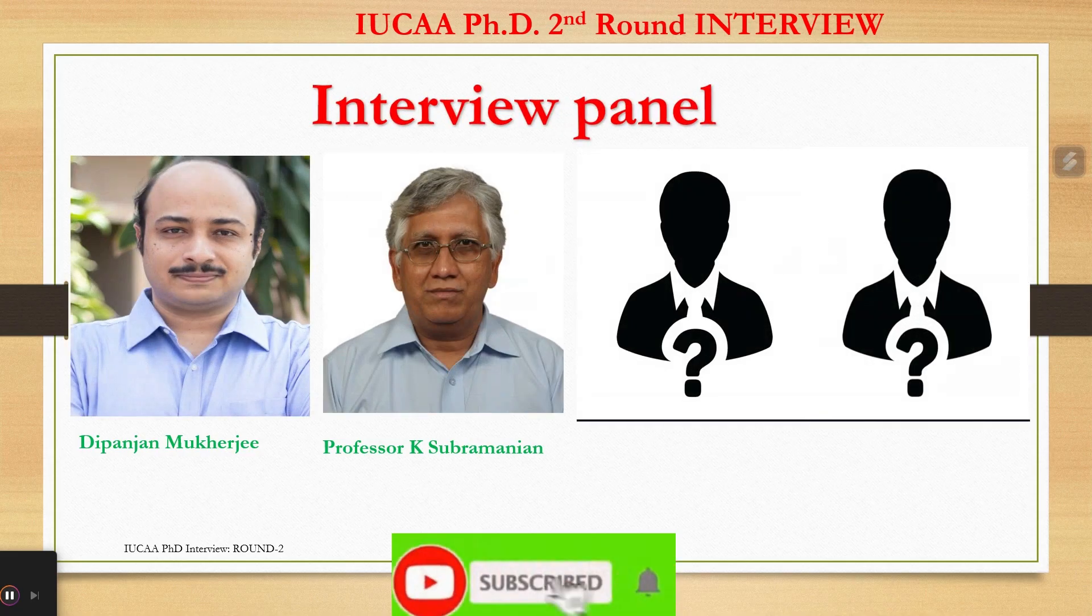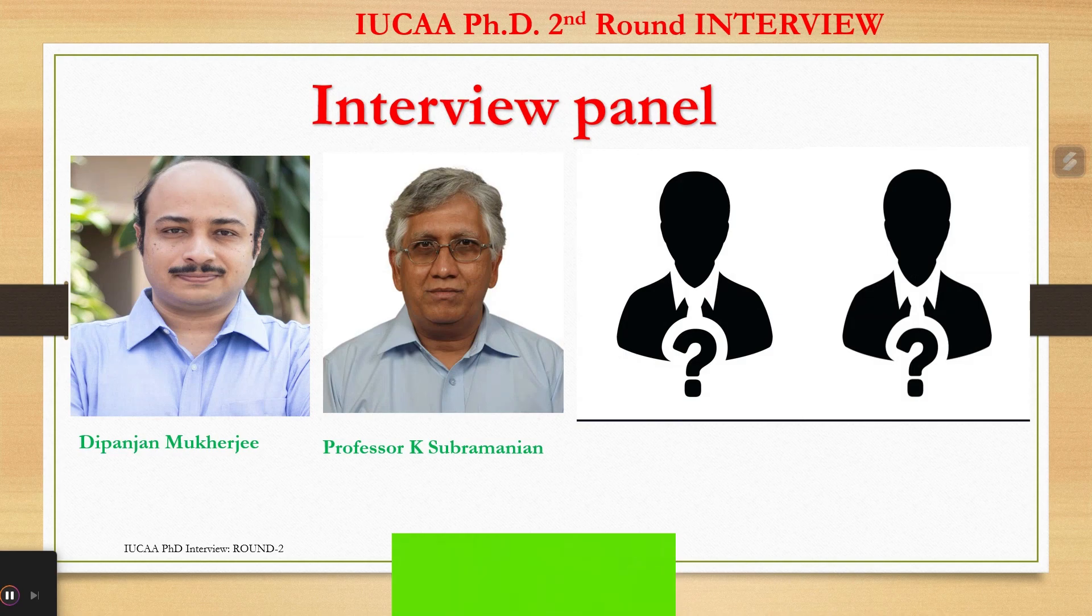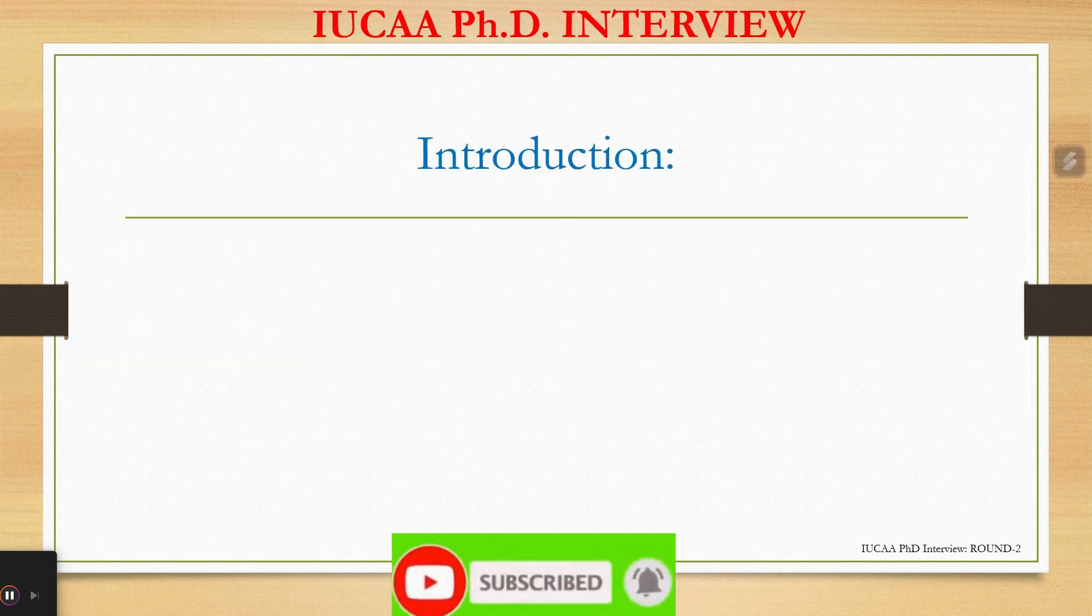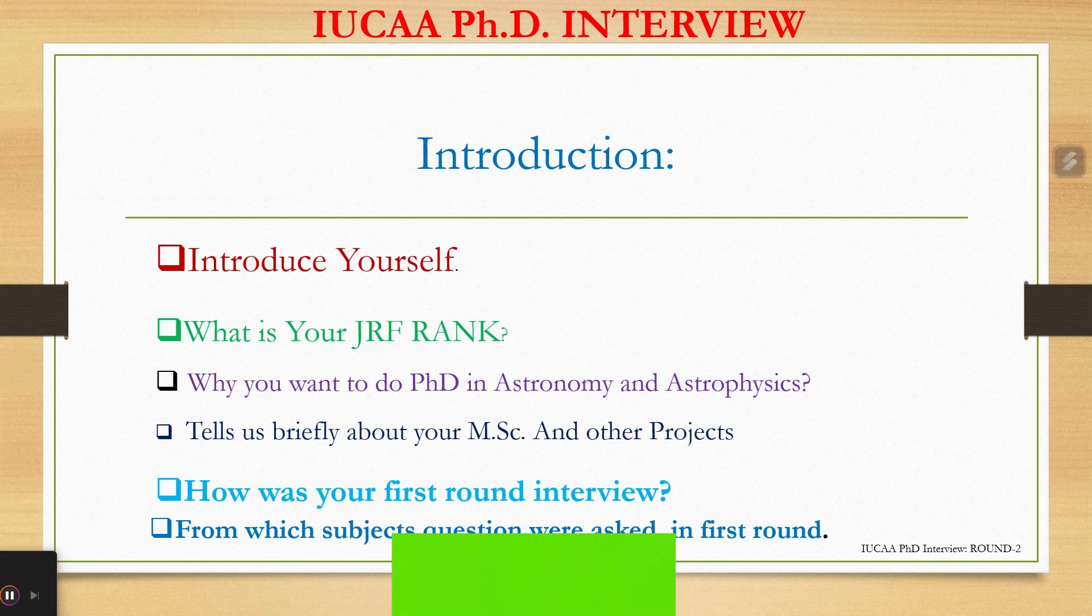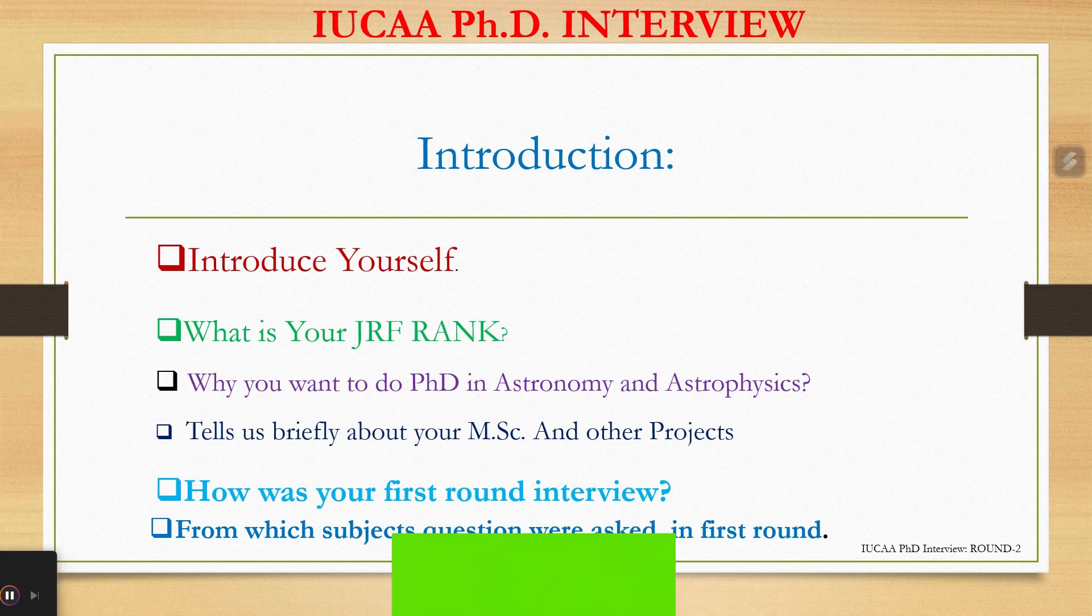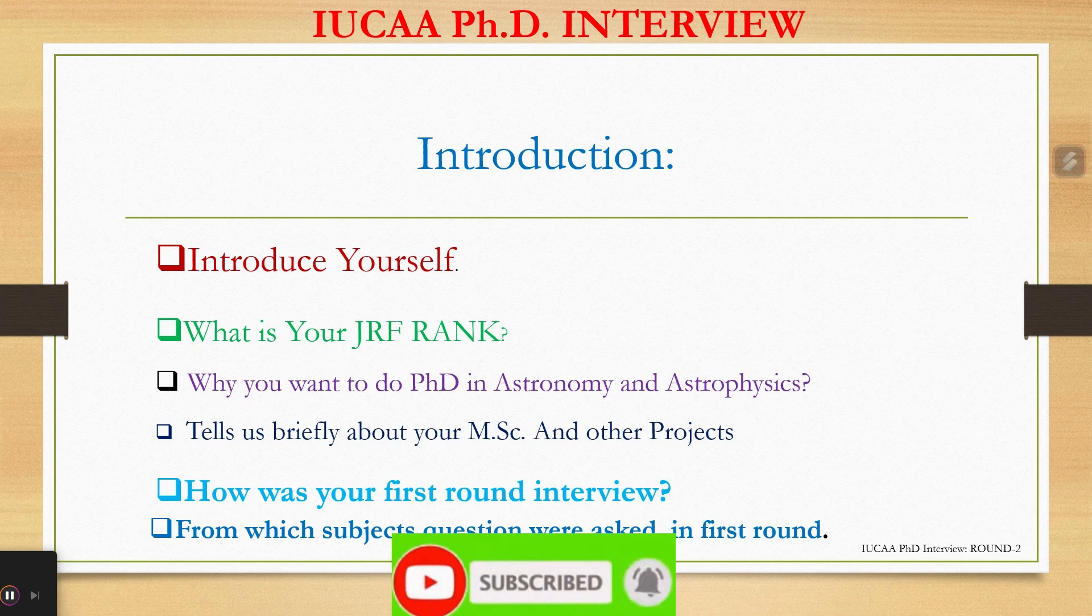When I joined my interview panel they asked me to introduce myself. Then inquired about JRF rank. Some queries like why you want to do PhD in Astronomy and Astrophysics. Tell us briefly about your MSc and other projects if you have done. What kind of questions and from which fields questions were asked. How was your first round of interview?